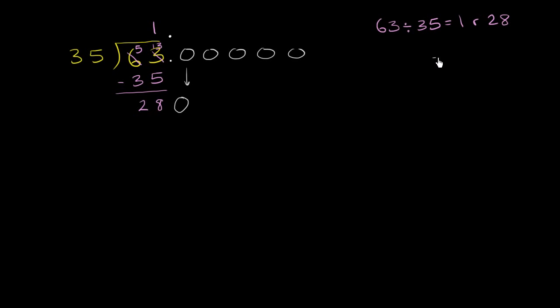So let's see what 35 times 8 is. 35 times 8. 5 times 8 is 40. 3 times 8 is 24, plus 4 is 28. So it actually works out perfectly. So 35 goes into 280 exactly 8 times.